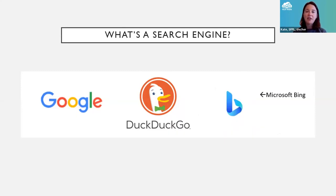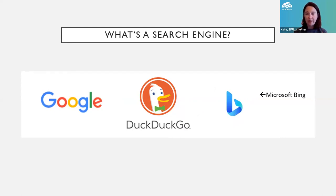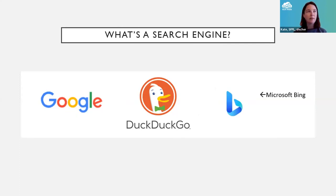A search engine is a separate concept from a browser. A browser is the program that shows you web pages on the internet. The search engine is the thing you use to find the information you want on those web pages — it's the thing that looks at all the web pages for you.